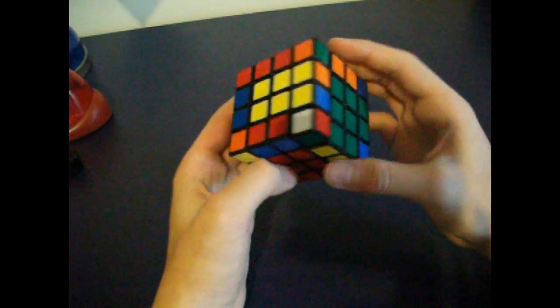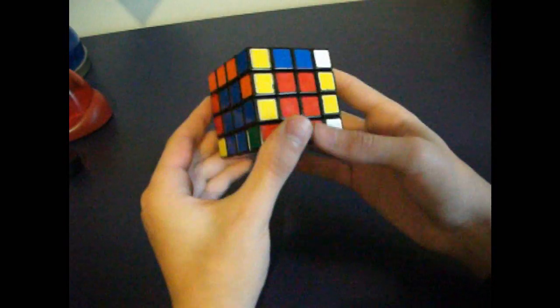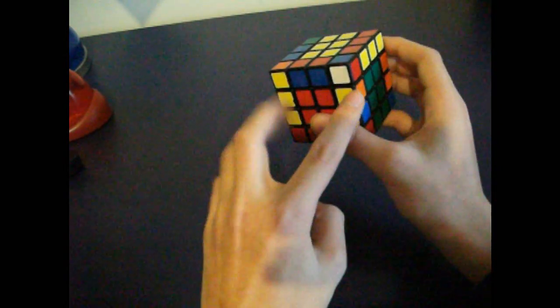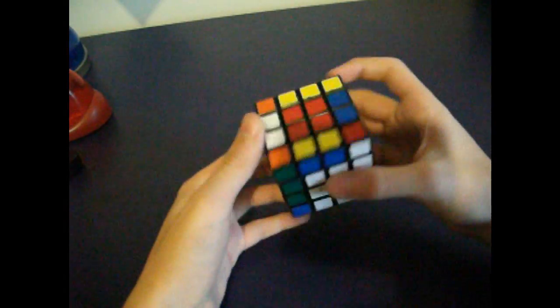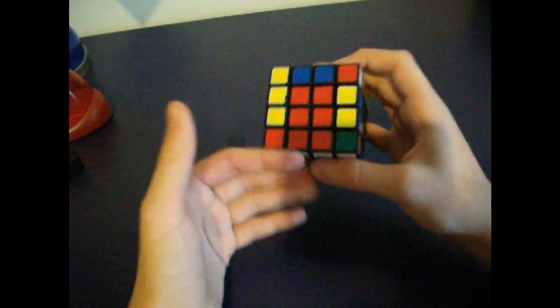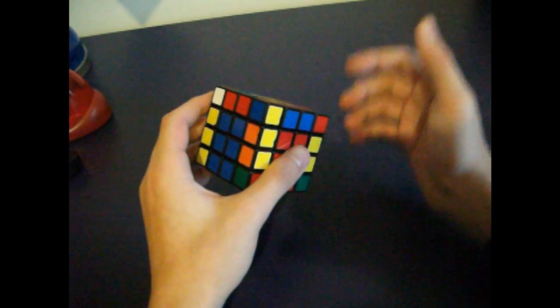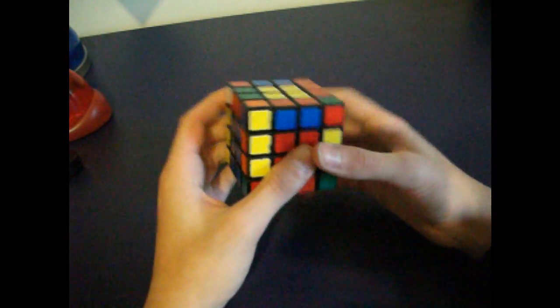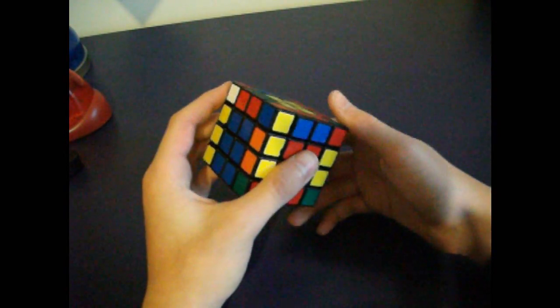Now I'm almost done with edge pairing, just have these last two. You want to avoid having two edges left, because then you have to mess up your cross a little bit to do a flipping algorithm, and then you've got to fix your cross, and that just wastes time. So you want to try to do them all in one or two edge pairing cycles or something like that.